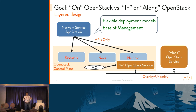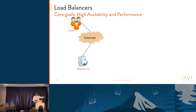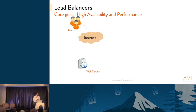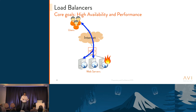The exact application we're targeting is load balancer as a service — an enterprise-grade load balancer. If you have just one web server connected to the internet and something happens, users lose connectivity. So you want multiple web servers for high availability, and you put a load balancer in front. When traffic comes in, the load balancer distributes it across web servers. If one goes down, the load balancer detects it continuously and stops forwarding requests to that server.